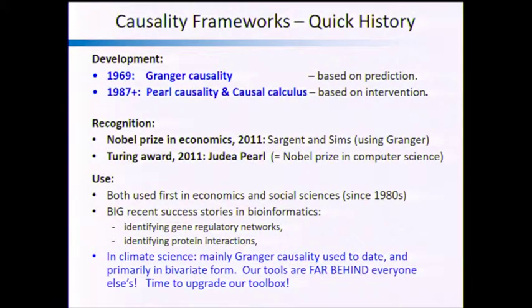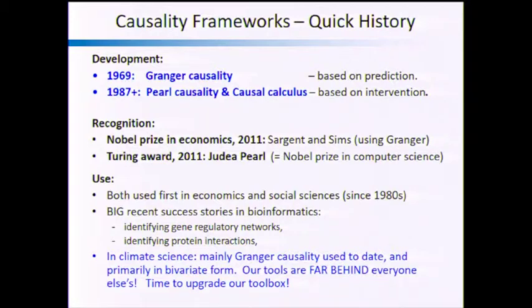Granger causality, from 1969, is mainly based on prediction, as I'll explain in more detail later. Pearl causality is more based on intervention studies, and I'll tell you more about that too. Pearl didn't just define Pearl causality — he developed this whole framework of causal calculus. In terms of recognition, the Nobel Prize in Economics in 2011 went to Sargent and Sims, where Sims basically used the Granger approach for macroeconomics. In that very same year, Judea Pearl got the Turing Award for his work on Pearl causality, which is pretty much the Nobel Prize in computer science. Same year — recognition for both frameworks.